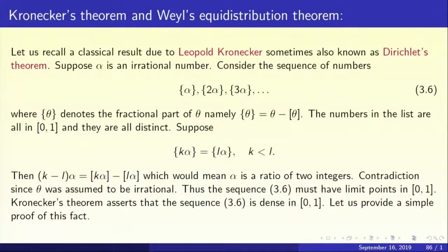Now let us look at another aspect of Fejér's theorem. We are going to use it to prove a very important theorem in number theory, a very classical theorem going back to Leopold Kronecker, sometimes known as Dirichlet's theorem. Suppose alpha is an irrational number. Consider the sequence: brace bracket alpha, brace bracket 2alpha, brace bracket 3alpha, and so on, where brace bracket theta denotes the fractional part of theta, that is theta minus the integer part. So all these numbers lie in the open interval 0, 1 when alpha is irrational.